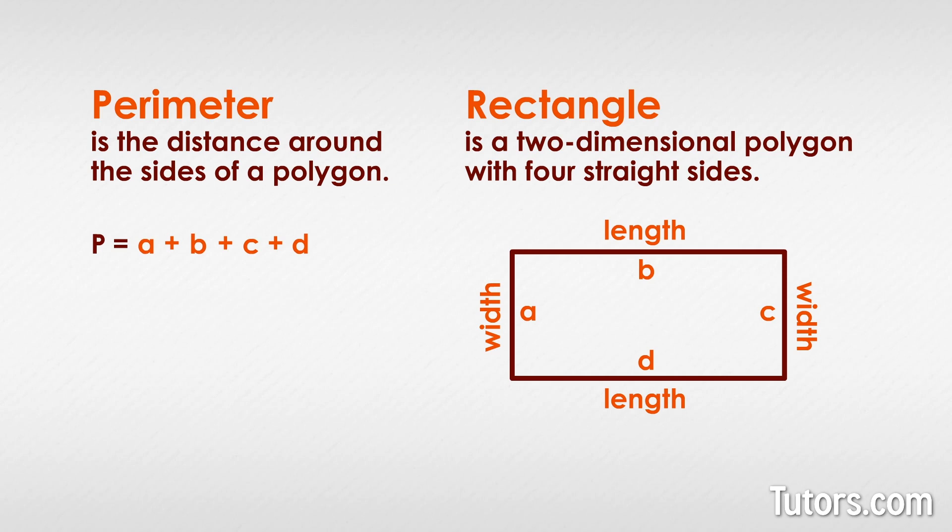Rectangles are interesting though because they really have two pairs of two sides, two lengths and two widths. So instead of writing out P equals A plus B plus C plus D, you can combine terms and multiply. This changes the equation to P equals two times length plus width. Perimeter is always expressed in the same linear measurement used for the lengths of sides.